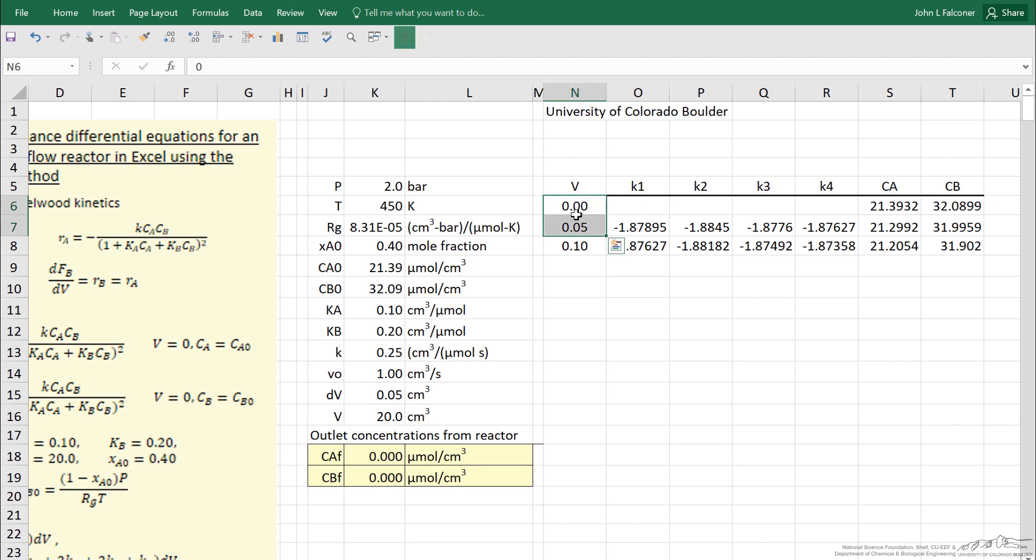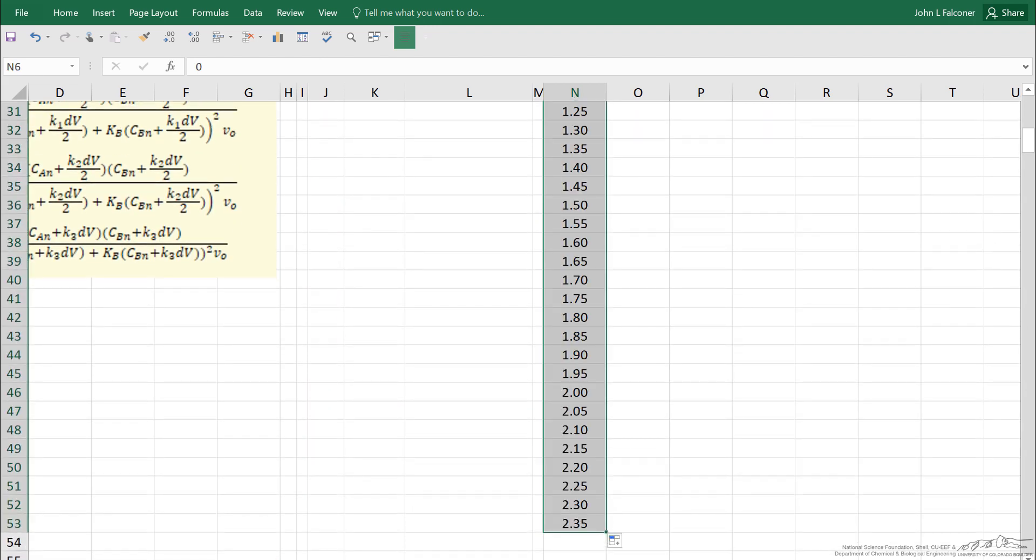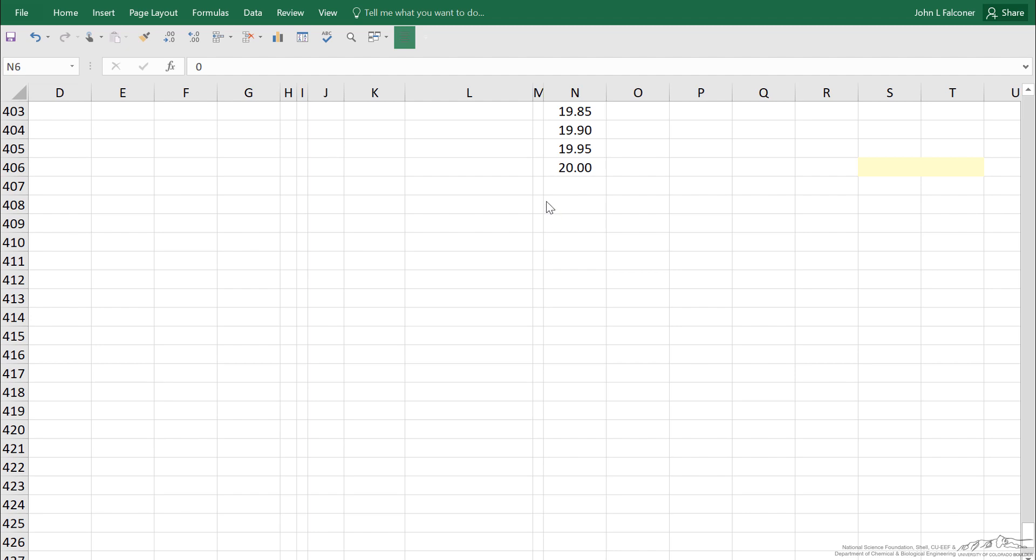You notice I put down a couple of steps. What I want to do now is do this all the way up until we get to 20. Let me pause and do that. You can see I stopped when the volume is 20 at cell N406.